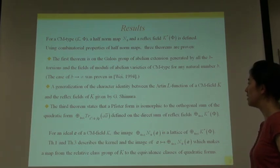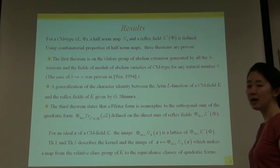The third theorem states that the Picard form is isomorphic to the orthogonal sum of the quadratic form, the reflex K-star-phi of Q A A-bar, here A-bar is complex conjugation, defined on the direct sum of reflex field K-star-phi.